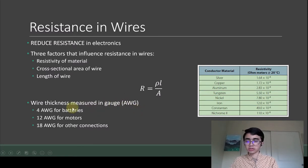For FRC batteries this year, we use 4 gauge wires. For motors we use 12 gauge, and for other connections like between controllers and CAN connections, which we'll talk about later on, we use 18 gauge wire.